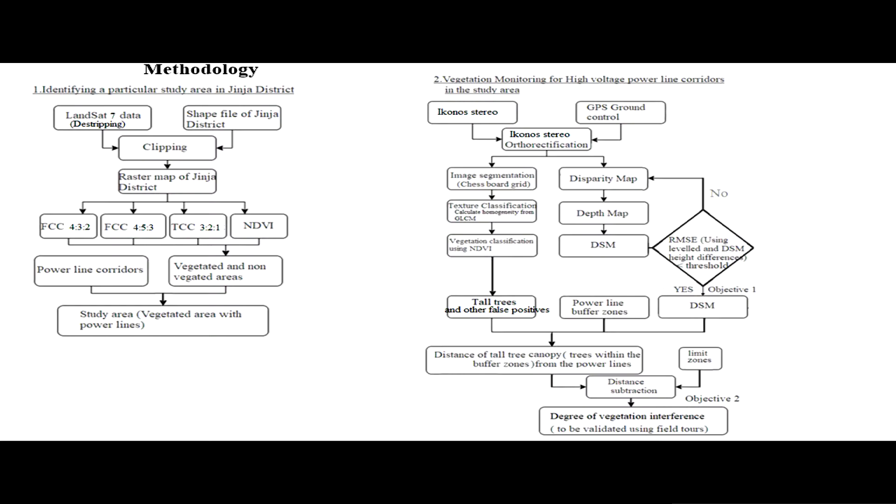I'm able to get vegetated and non-vegetated areas. When I impose the power line corridors on that, I'm able to get the study area. In part two, when I get that particular area in Jinja, now I'm doing vegetation monitoring in that study area.